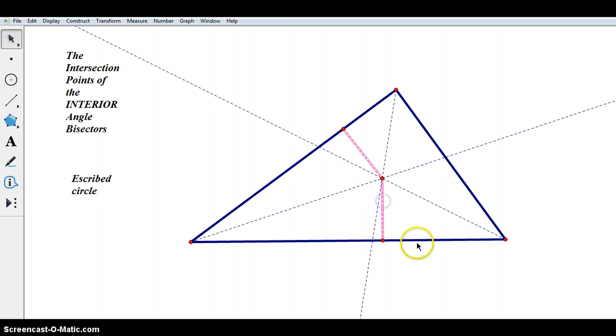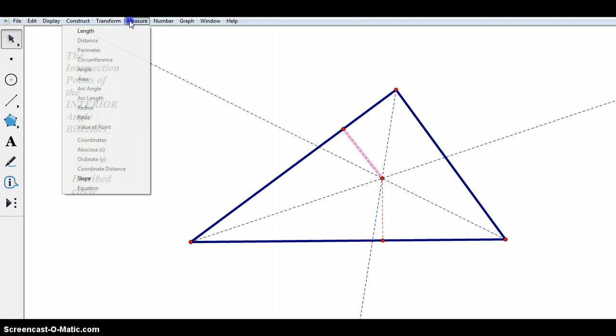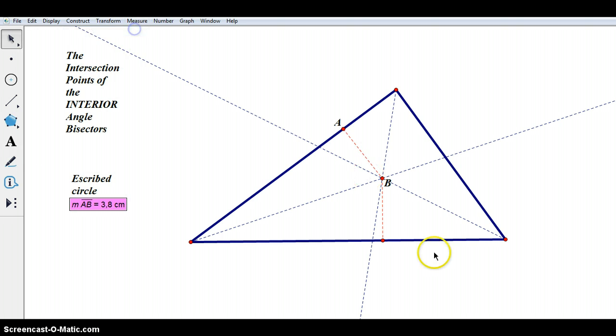So straight away, we're saying that these two distances should be the same. Let's just check that out. Measure the length of that. 3.8. Measure the length. I'm going to not highlight that bit. Measure this length. And yeah, they're both 3.8. Okay, that bodes well.